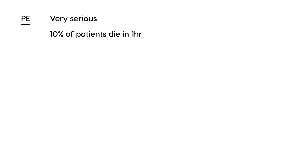Remember, the risk factors for developing a DVT — deep venous thrombosis — begin in the lower extremities. Once it travels to the lung and becomes a PE, that is very serious. To give you an idea of how serious: 10% of patients can die within one hour. This is a very tragic occurrence that can happen in people quite young — I've personally seen it happen in someone as young as 32.